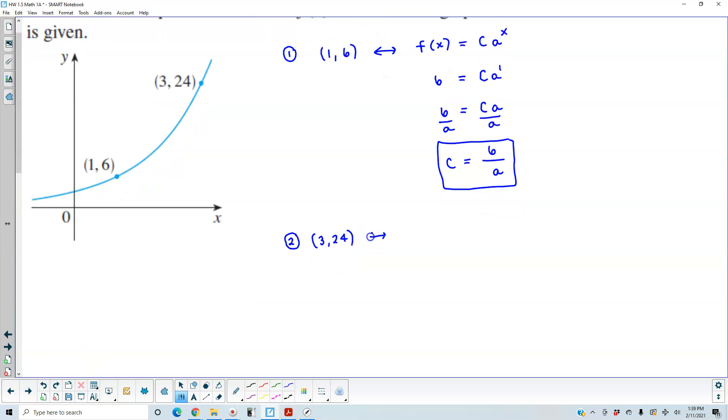So now using the same function formula, we have f of x, which is equal to c a to the x. Now we know that f of x is going to equal 24. And now we know that c is going to equal 6 over a. And we know that x is going to equal 3.